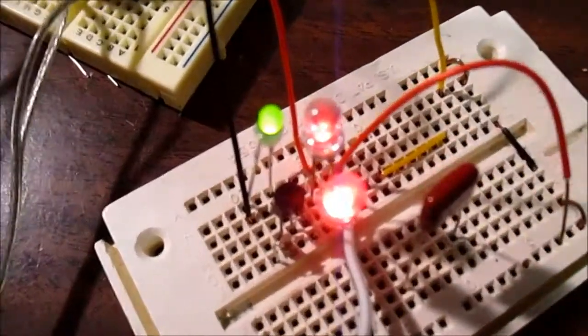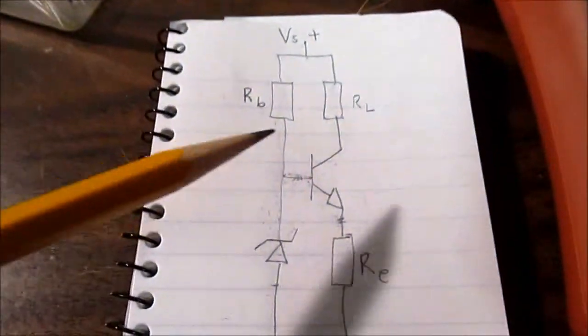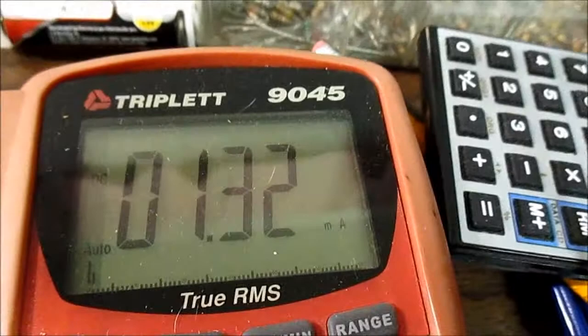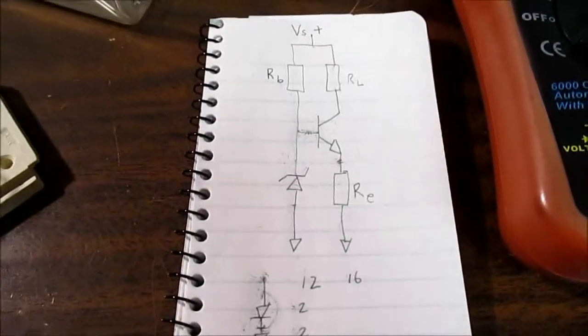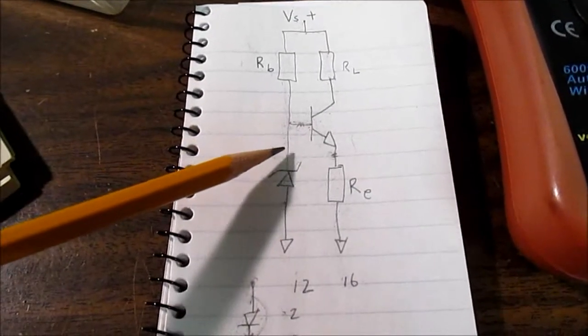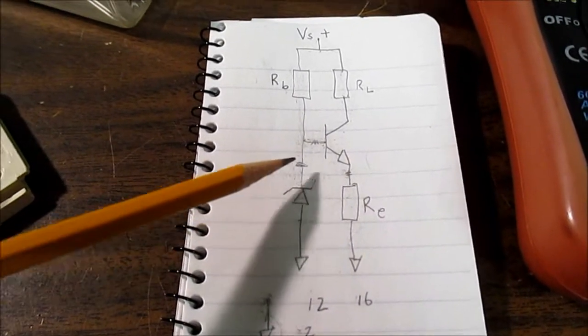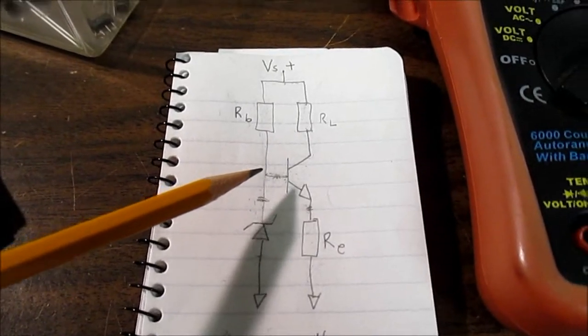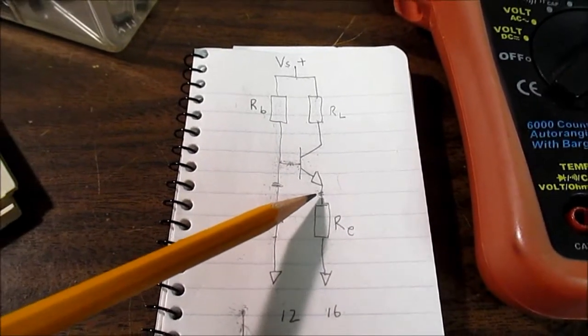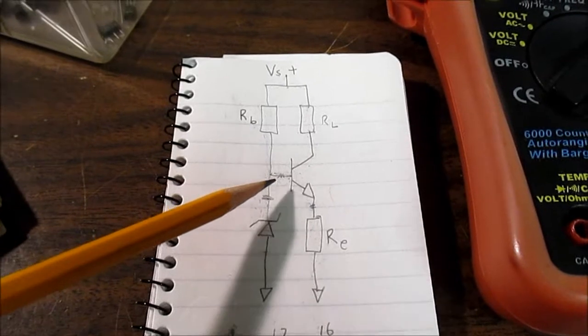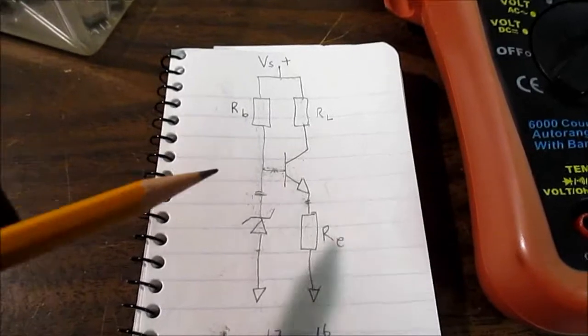I have a current regulator circuit set up here on the breadboard. I'm monitoring the collector current with a meter here. And it's pretty easy to calculate the current that the circuit will produce. Well, you just take the voltage at this point, so that would be our Zener voltage. And you subtract the voltage drop here. And then you just apply Ohm's Law using the value of this resistor. And that's what the current ends up being.